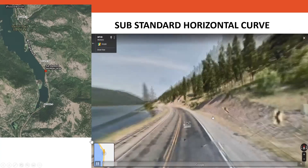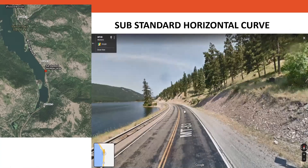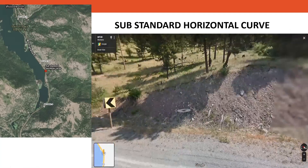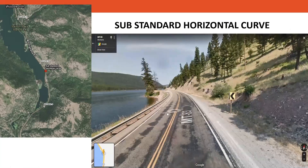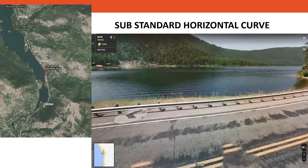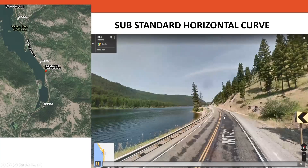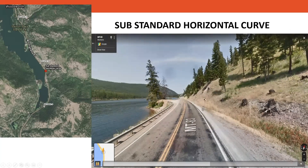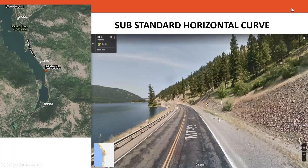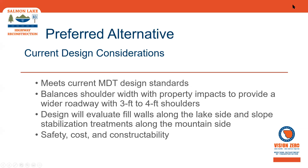You can see on the left side of the screen where the substandard curve is in relation to the entire project — kind of more in the middle. The intent of the design is to modify the curve so it's not such a sharp turn to meet current design standards, which will also help improve sight distance for drivers. A preferred alternative was identified through that process, balancing roadway width with property impacts while providing wider shoulder widths varying from three to four feet depending on location and site constraints.